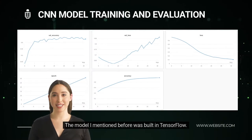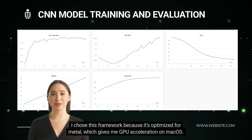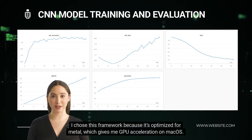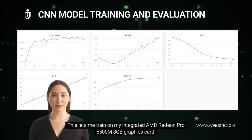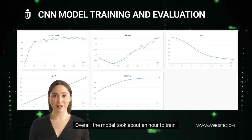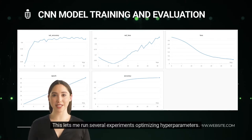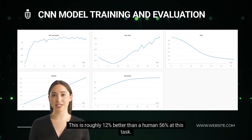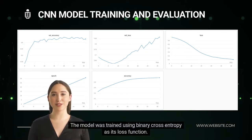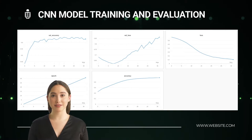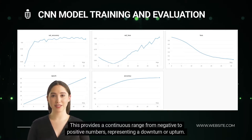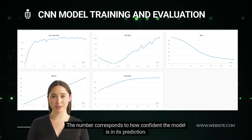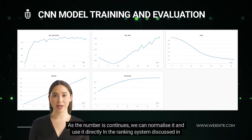The CNN model was built in TensorFlow, chosen because it is optimized for Metal, giving GPU acceleration on macOS with my integrated AMD Radeon Pro 5500M 8GB graphics card. The model took about an hour to train, allowing several experiments for hyperparameter optimization. The best training run achieved an accuracy of 68 percent, roughly 12 percent better than a human at 56 percent on this task. The model was trained using binary cross entropy as its loss function, providing a continuous range representing a downturn or upturn. This continuous output can be normalized and used directly in the ranking system.